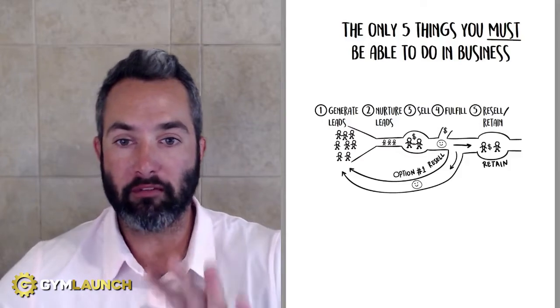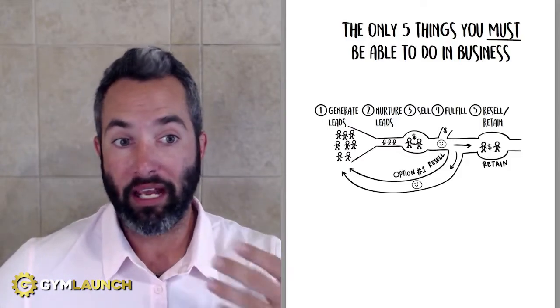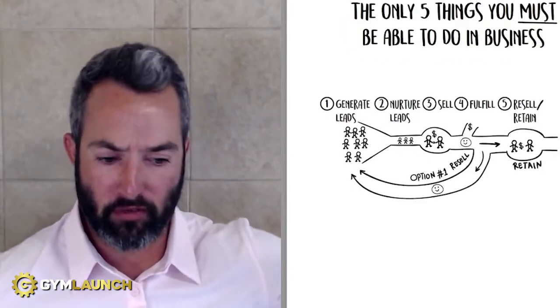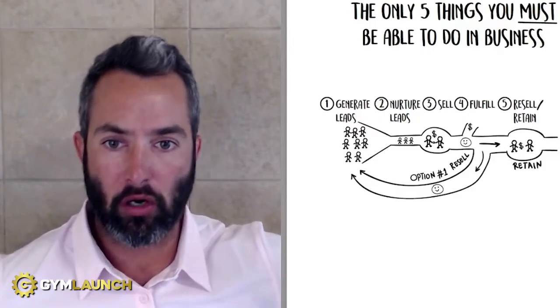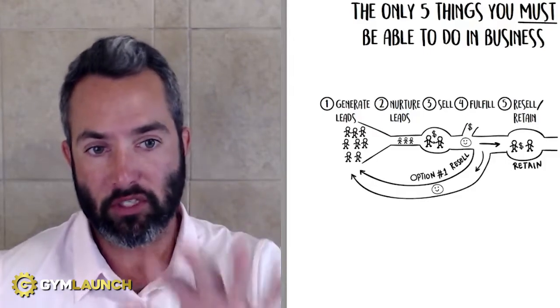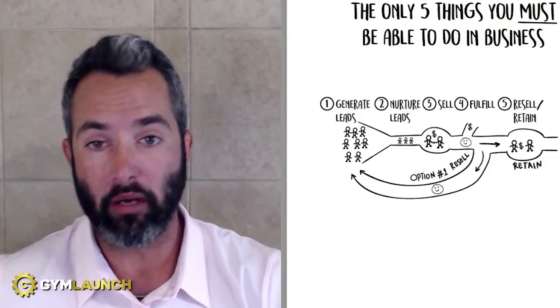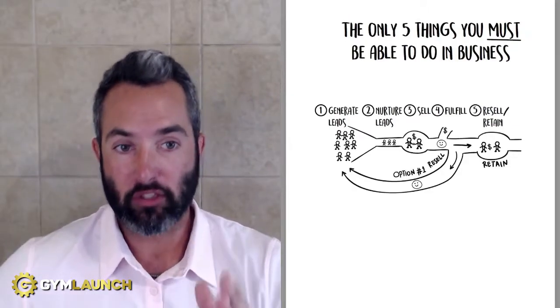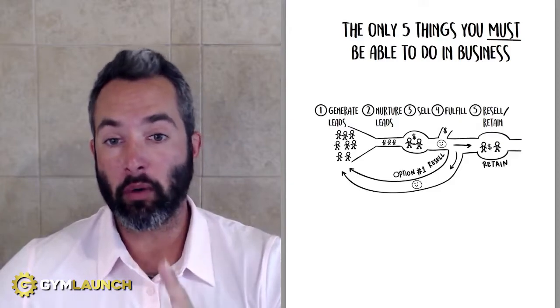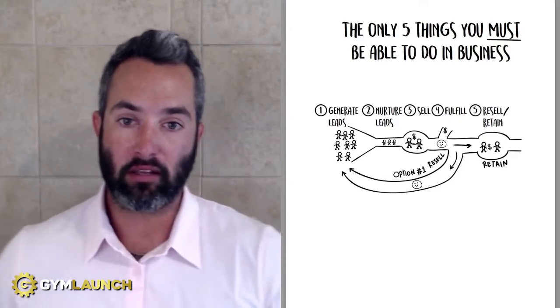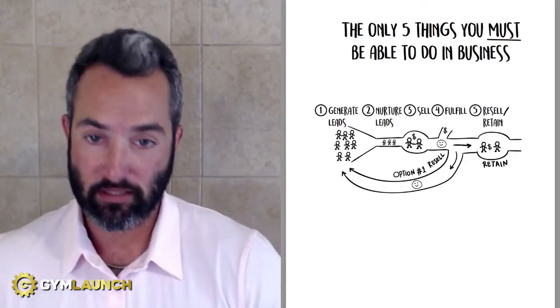These five things are what we call the five core business functions within any business. You can talk about other stuff like finance and HR and teams and all that stuff. But when it comes to growing and scaling your business from a customer standpoint, these are the five things that you need to do. Number one is we need to generate leads. Do you have the skill set and the ability to go out and generate leads for your business consistently?